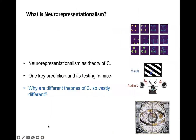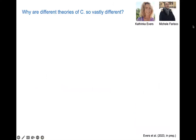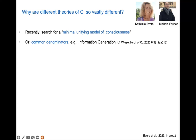I think it's time to wrap up. This last part is about how to compare theories of consciousness and trying to see why they're often so vastly different — work done with Katinka Avers and Michele Ferrisco in the Human Brain Project. It's responding to the need or search for a minimal unifying model of consciousness, a question raised by Ryota Kanai and also Van Javise in a paper searching for common denominators across various theories. Can we identify common denominators that are held in common and could serve as a minimal unifying model? Like Van Javise would say, a common denominator has to be a necessary feature of consciousness that you cannot dispense with, entailed by multiple theories.